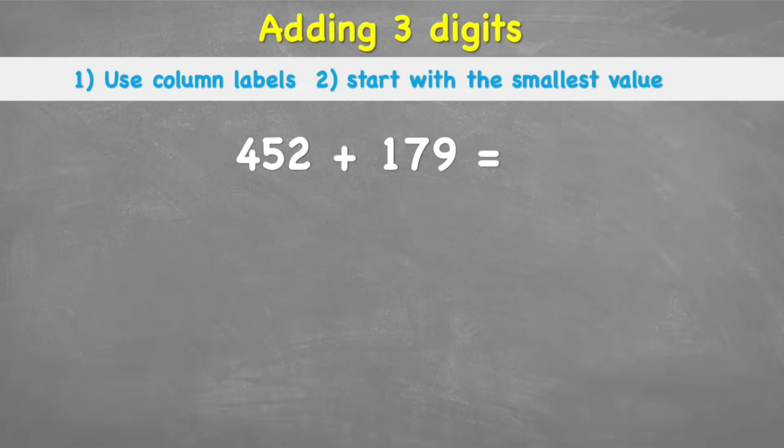So our two tips for today. Number one, we're going to try and use column labels. We'll see what that means in a moment. And number two, we're going to start with the smallest value. Again, we'll see what that means just now.